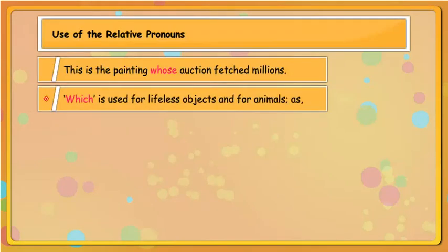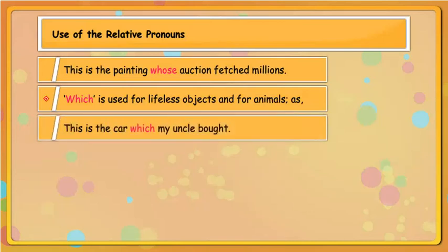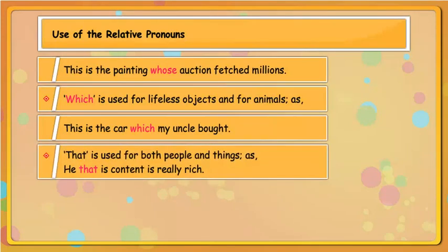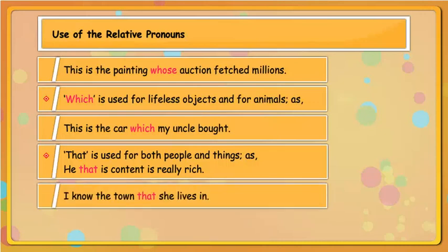'Which' is used for lifeless objects and for animals. As: this is the car which my uncle bought. 'That' is used for both people and things. As: he that is content is really rich. I know the town that she lives in.